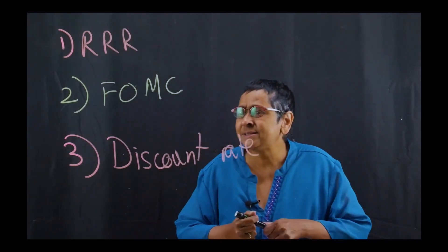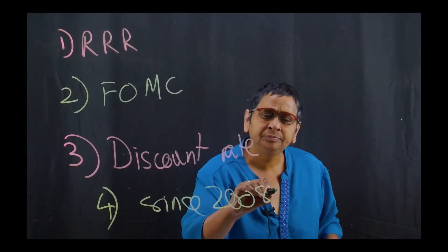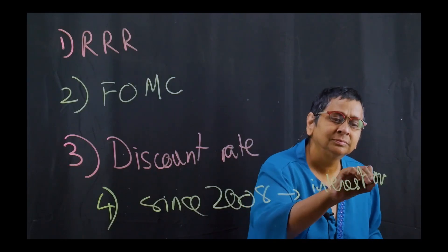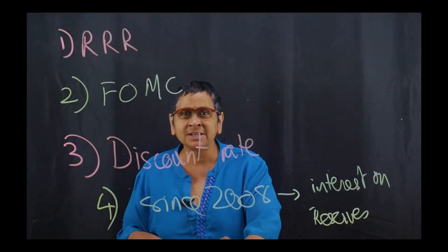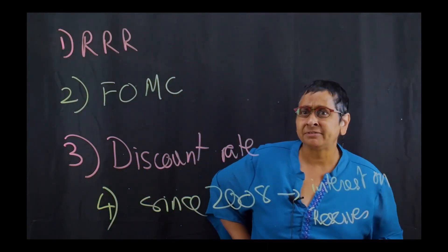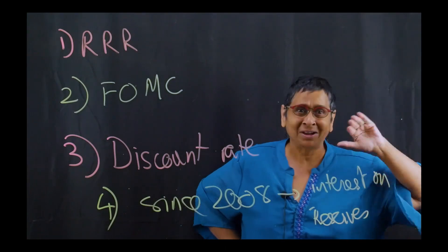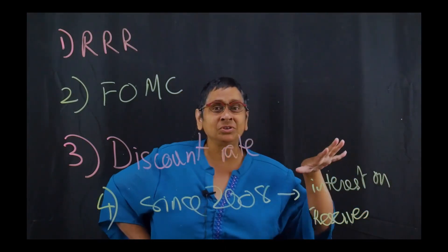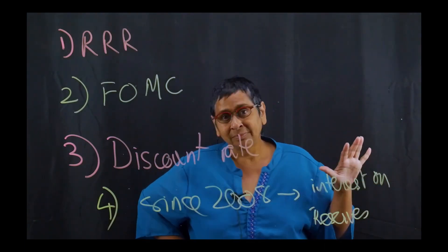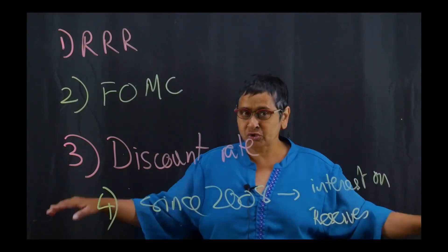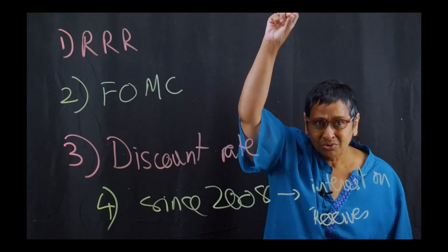So what the Fed has been doing since 2008 is a fourth policy: the Fed now essentially offers interest on reserves held at the Fed. Even if banks have excess reserves, the Fed pays them interest on those accounts — similar to how my bank offers interest-bearing checking accounts. This finally gave the Fed a way to pay interest to banks for the accounts that banks hold with it.